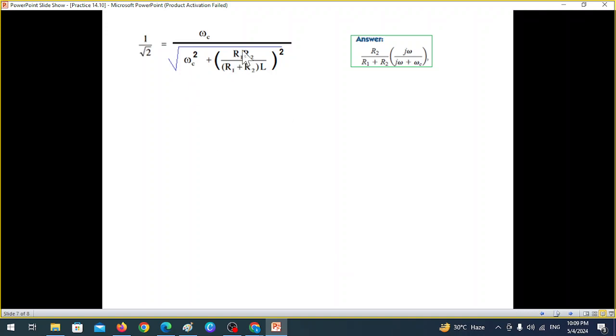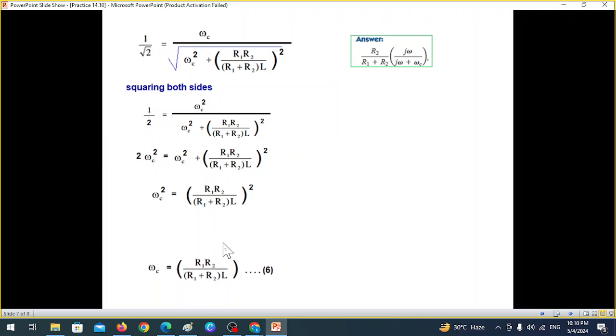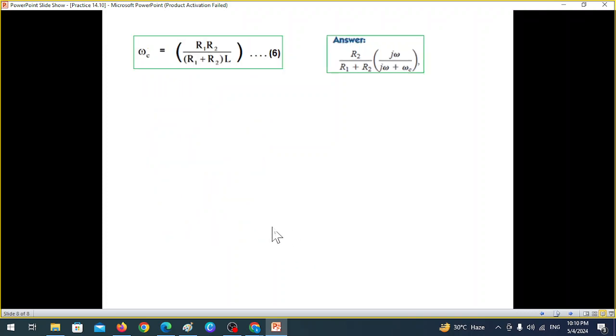So we were here. Now to eliminate the under root, we'll just square both sides. So this will become 1 over 2. This will become ωc². And this under root will vanish. Now we cross multiply. We get this term. And now move ωc² on the left. So ωc² is (R1·R2)/[(R1+R2)L]². Now we can remove the squares. So ωc will be √[(R1·R2)/((R1+R2)·L)]. We'll only consider the plus sign because frequency cannot be negative. So this is our ωc.